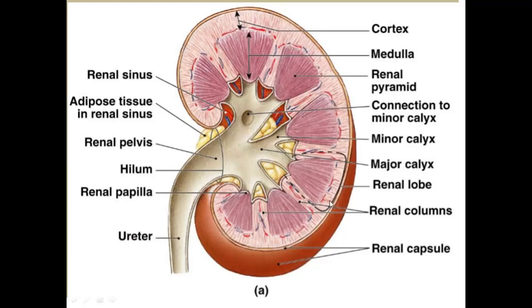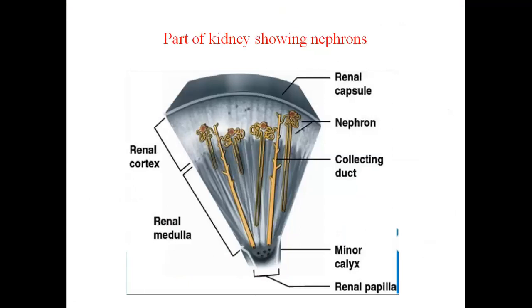So this is the complete structure of the kidney. If I take a part of the kidney showing the nephron, which we also call the uriniferous tubule, and magnify it, we will see it in detail. The renal capsule is the upper covering, below which is the renal cortex and the renal medulla. In the renal cortex and renal medulla there are millions of structural and functional units in the kidney, which we call nephrons or uriniferous tubules. Some parts of the nephron are present in the cortex and some parts are present in the medulla.